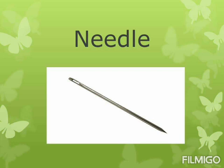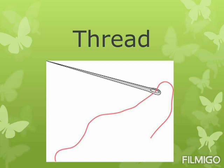The first word is needle. Needle — kattuva. Next word is thread. Thread — nul.